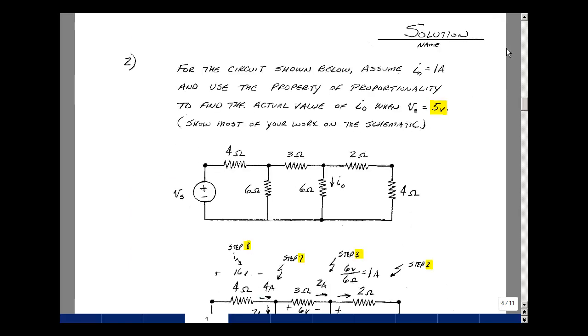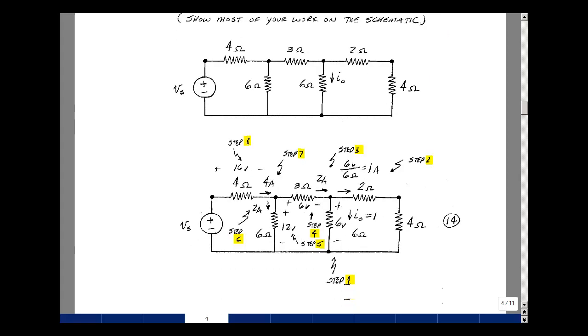In problem number two, we're given a circuit. We want to solve for I out when V sub s is 5 volts. We're going to use the property of proportionality to do this by letting I out equal 1 amp and figuring out the value of V sub s that would produce that. Then the ratio of I out to V sub s is our proportionality constant, and we can use that to solve for the condition when V sub s is changed to 5 volts. Let's make I out equal to 1 amp. Flowing through 6 ohms, I'd have 6 volts across these two points. With 6 volts here and a total of 6 ohms, I would have 1 amp going in this direction. If I have 1 amp here and 1 amp here, then I have 2 amps here.